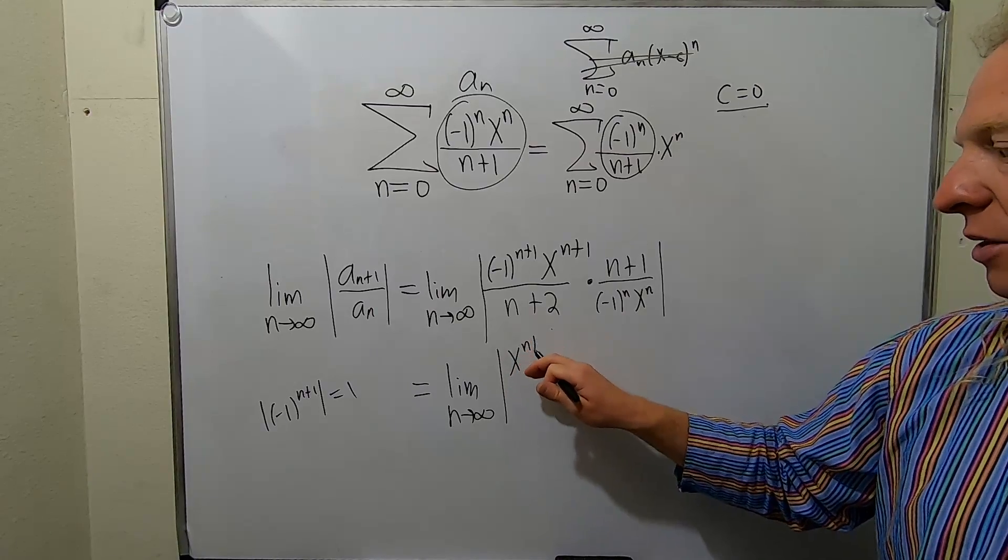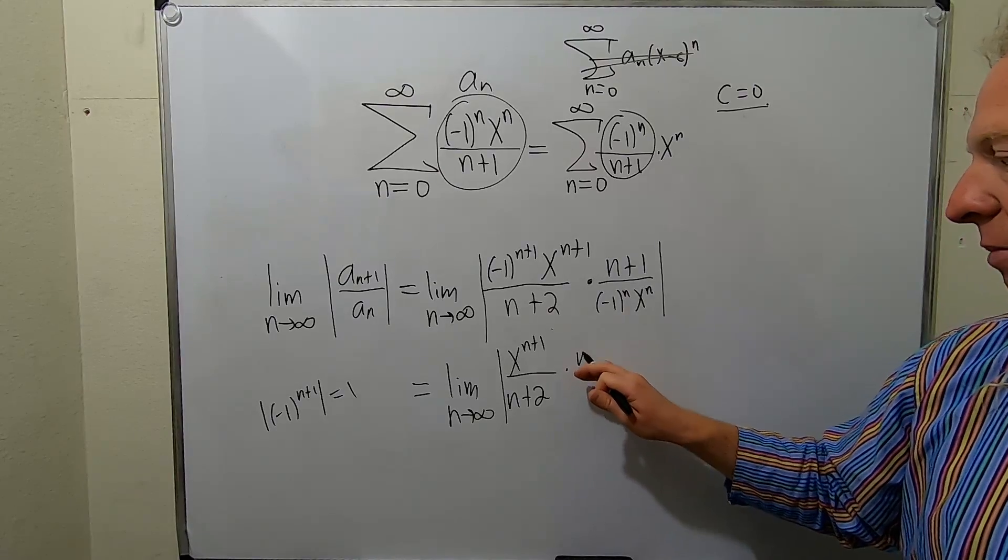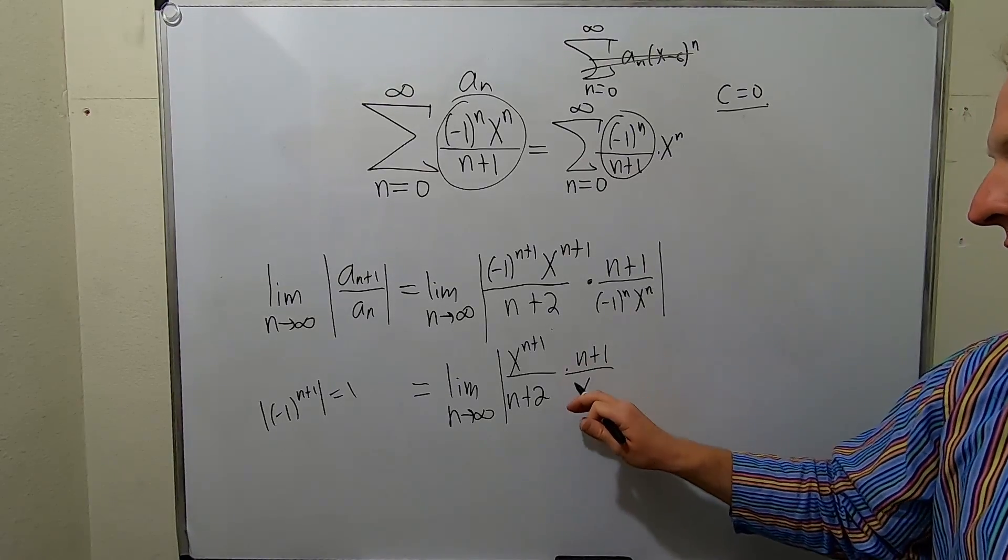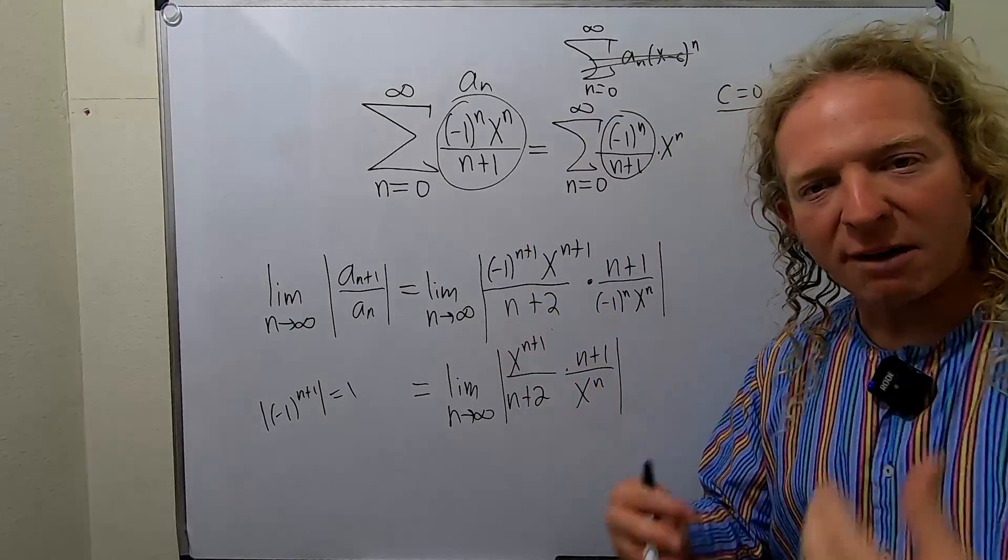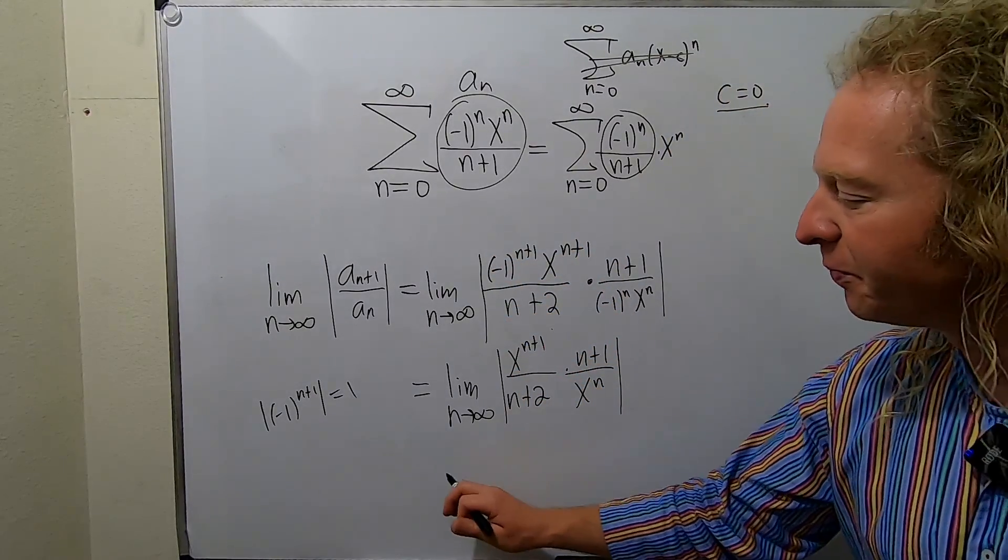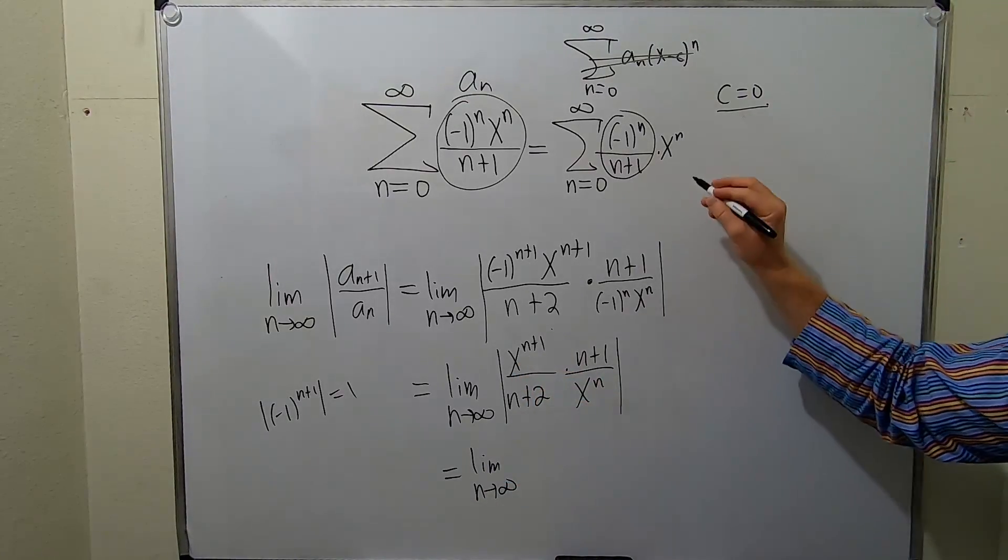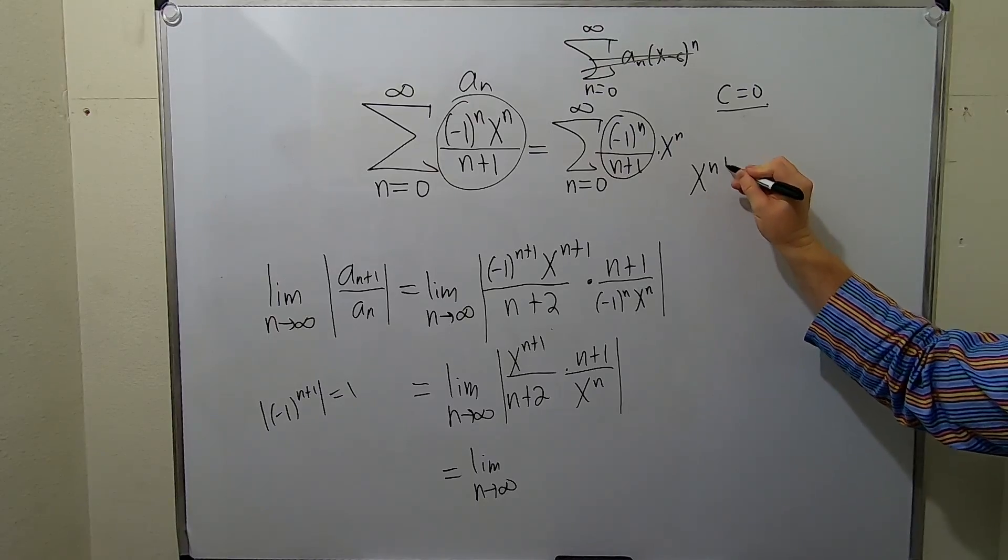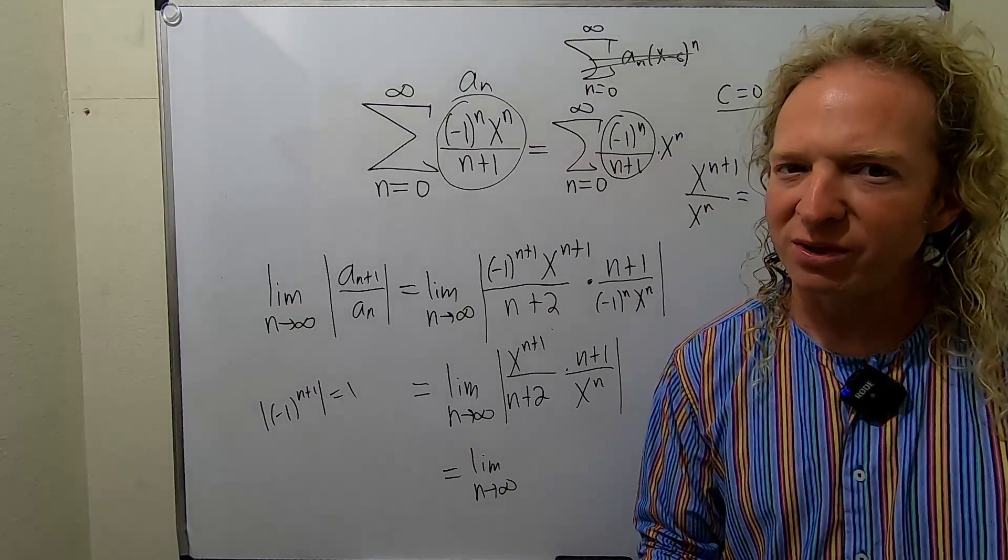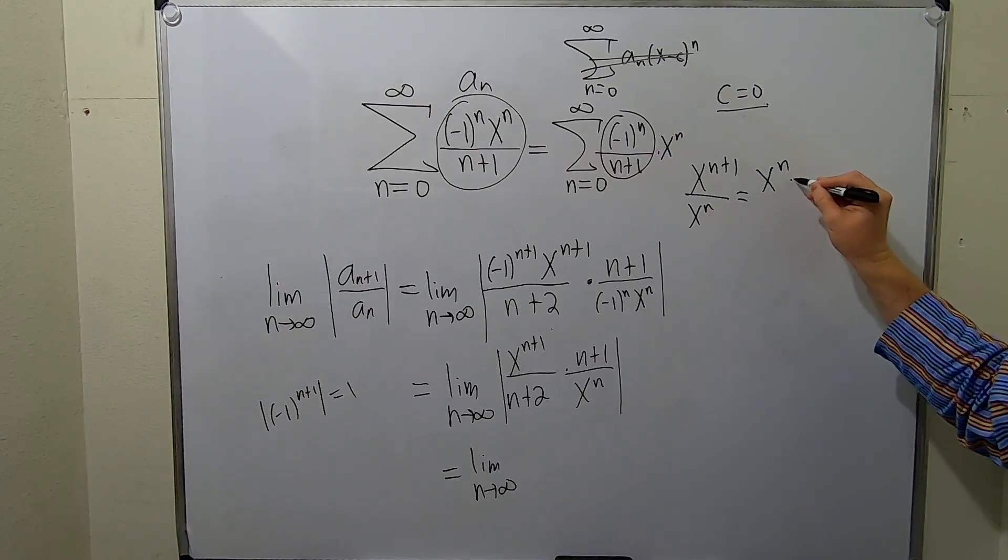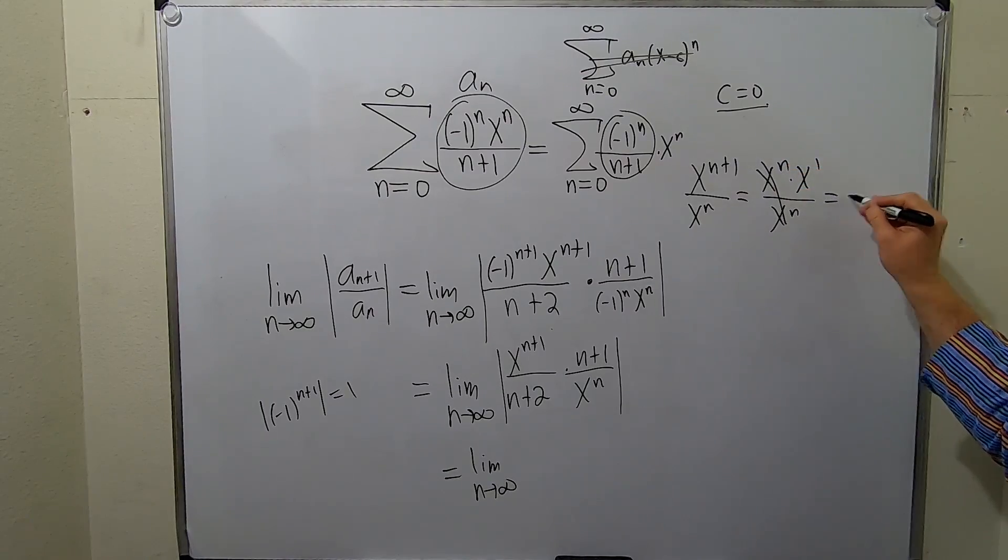This is x to the n plus one, and then here we have n plus two times n plus one over x to the n. Now we can simplify these. We could have done it in this step here but I'm just trying to show a few extra steps. So this equals the limit as n goes to infinity. Let me go to the side and show you. If you have x to the n plus one over x to the n, you can use the properties of exponents. You can write this as x to the n times x to the one. It's beautiful. I love this stuff. And look at that, it goes away. You just get x. Awesome.